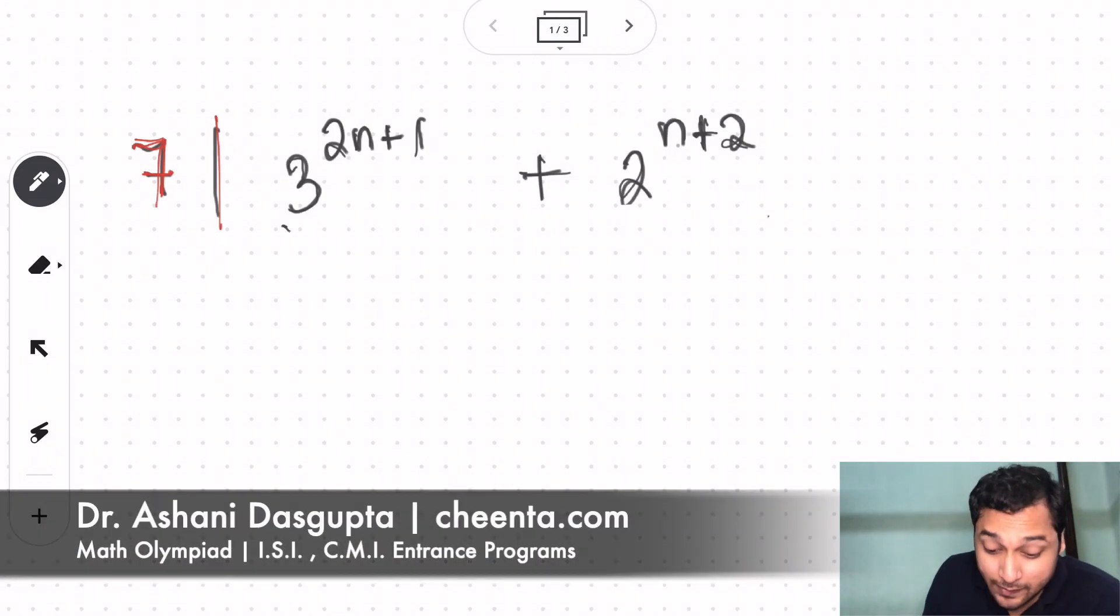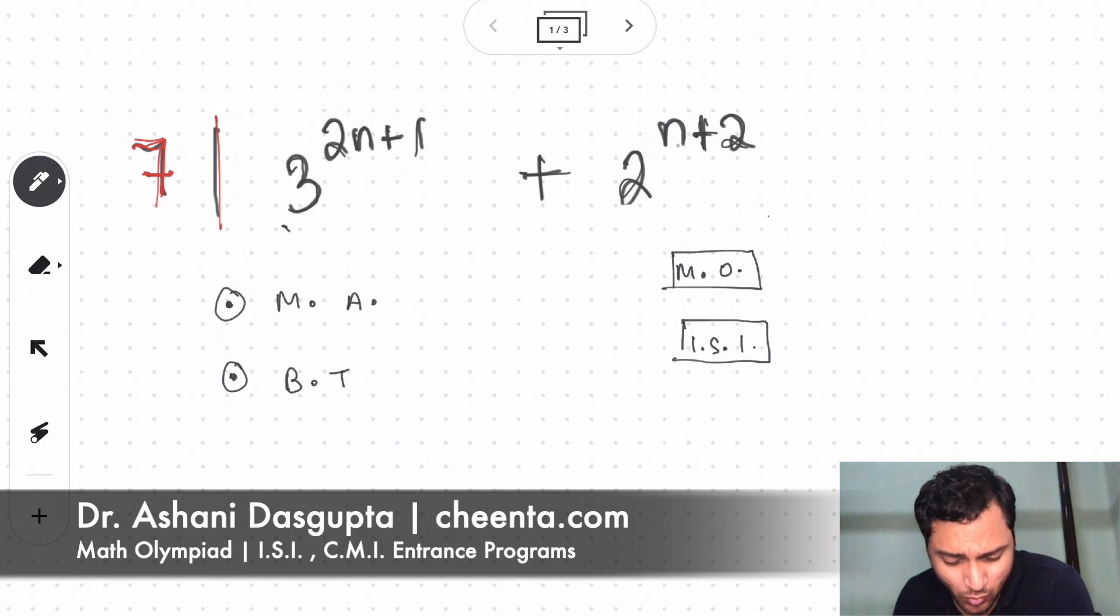Hello everyone, today we will be learning two things. The first thing is modular arithmetic, how to apply it in a problem, and the second thing is how to do the same problem without using modular arithmetic, just using binomial theorem. Both of these ideas are discussed in the Math Olympiad program at Chinta in the number theory module and the ISI entrance program at Chinta. You can go to chinta.com to check those out as well if you want.